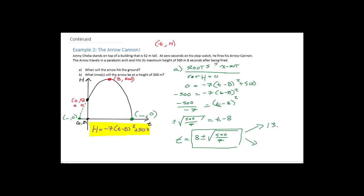The negative value of −0.5 seconds is on the other side of the parabola — we don't care about that because our stopwatch started at t = 0 when the arrow was fired. So the answer to 'when will the arrow hit the ground?' is approximately 16.5 seconds. You cannot answer these questions without the equation, and they will not give you the equation — you have to figure it out first.